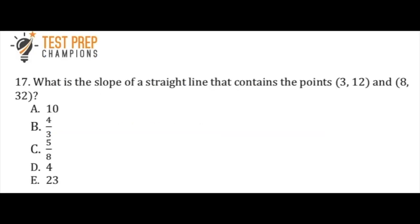Okay, the next question says, what is the slope of a straight line that contains the points (3, 12) and (8, 32)? Pause the video, try to figure this out, and then we'll go over it. Really, the first thing you need to know is that this 3, 12, this is a coordinate pair, okay? And these are points that you could put on a graph.